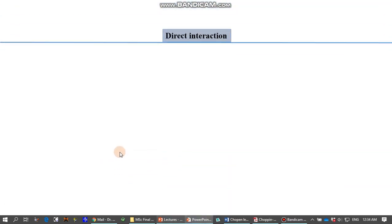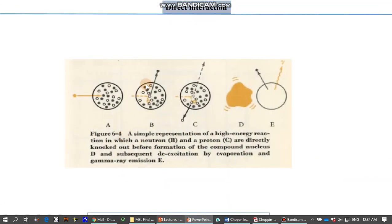Now, this is the explanation of the theory diagrammatically. This figure has been adopted from the book written by Choppin. Here we have five different diagrams. This is a bombarded particle, preferably a neutron. Inside the nucleus there are neutrons and protons. The solid particles represent protons and the hollow particles are neutrons, or you can consider vice versa.